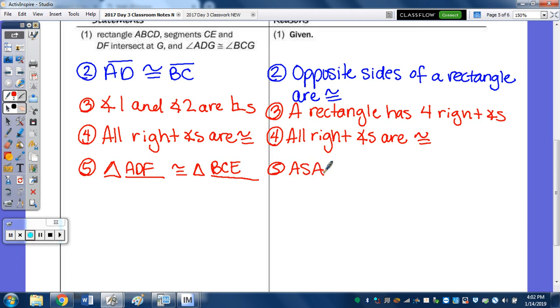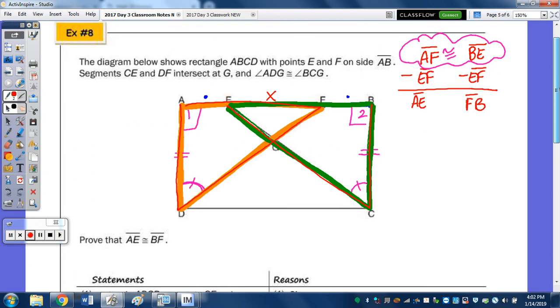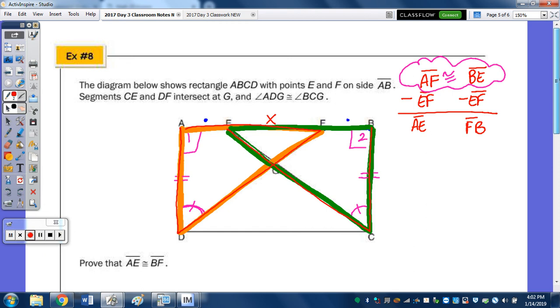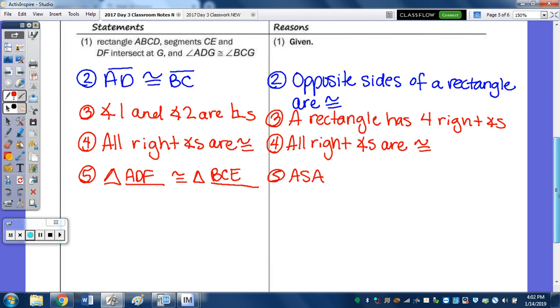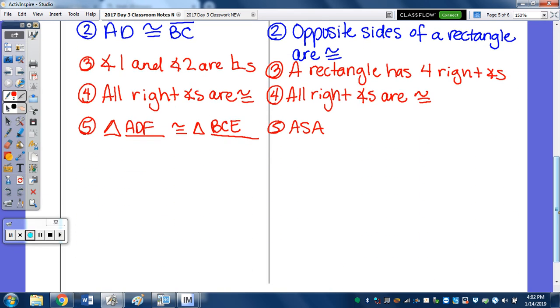And then the last two steps, or three rather, are going to come back up to what we were discussing at the start, right here. So the question was, how did I get these two sides to be congruent? Well, once we prove the two triangles are congruent, any corresponding part is congruent by CPCTC. So step six is going to be AF congruent to BE, CPCTC.